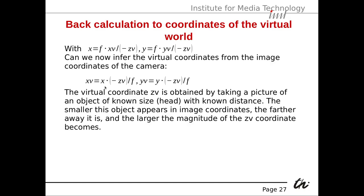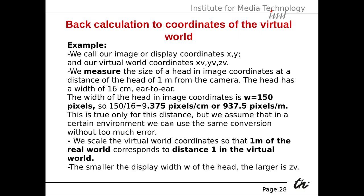We can infer the virtual coordinates from the image coordinates of the camera. Taking the equation and solving for XV, we get XV equals X times minus ZV divided by F. The same for YV: Y times minus ZV divided by F. The virtual coordinate ZV is obtained by taking a picture of an object of known size — here the head — at a known distance. The smaller the object appears in image coordinates, the further away it is, and the larger the magnitude of ZV becomes.